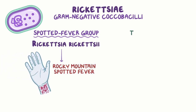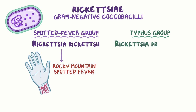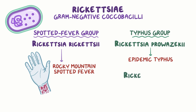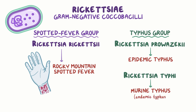Second, there's the typhus group of Rickettsia species, which cause different forms of typhus. This group includes Rickettsia prowazekii, which causes a disease called epidemic typhus, and Rickettsia typhi, which causes murine typhus, also called endemic typhus.